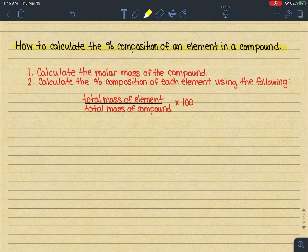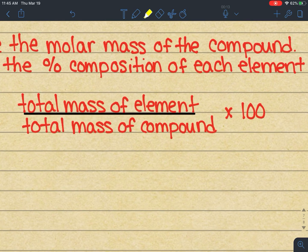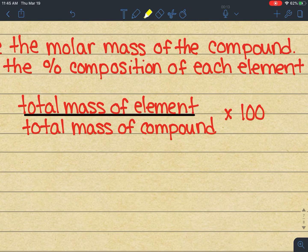All right, so step one, you're going to calculate the molar mass of the compound, and then the next step is fairly simple. You'll calculate the percent composition of each element by looking at the total mass of the element, dividing by the total mass of a compound, and then multiplying by 100.